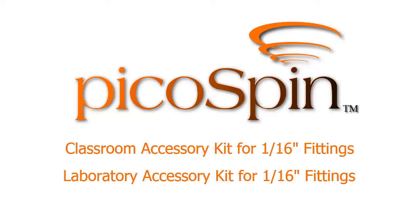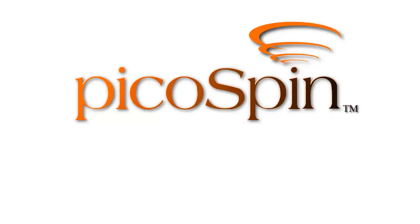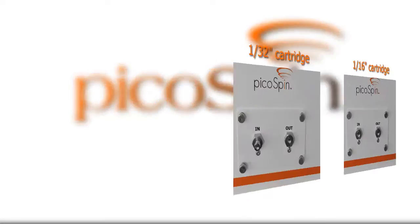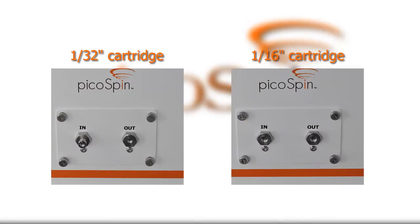The procedure for sample transfer is similar for cartridges with 1/32nd inch fittings, except that a filled tube assembly is required. So how can you tell if your cartridge is a 1/16th inch or a 1/32nd inch fitting?